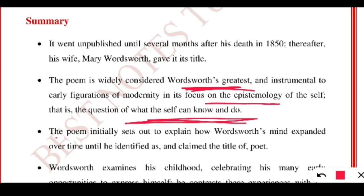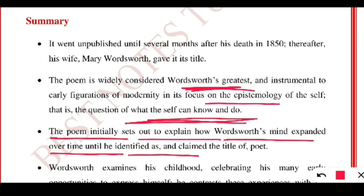The poet initially sets out to explain how Wordsworth's mind expanded over time until he identified as and claimed the title of poet. Right from the beginning he was working on this project, gradually upgrading himself, and finally found how much maturity he had gained — then he claimed for the title, that is The Prelude.